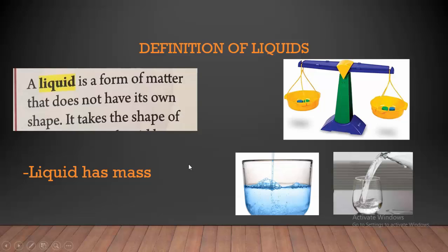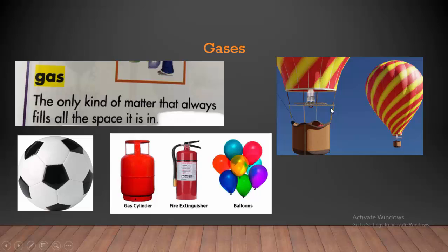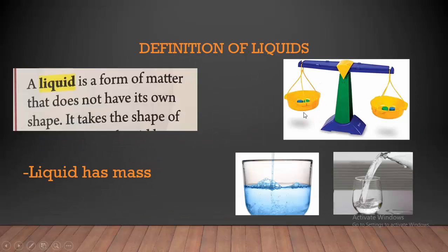And also liquids have mass. All liquids have mass. How can we measure the mass of liquids? We can use the pan balance. This is a pan balance. We can use the pan balance to measure the mass of liquids.